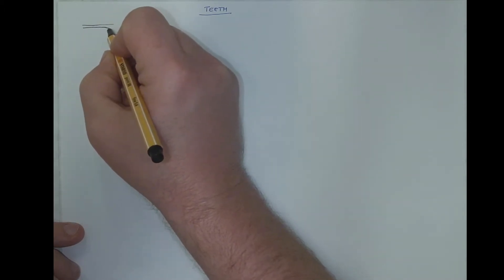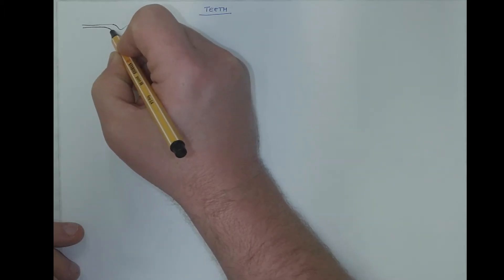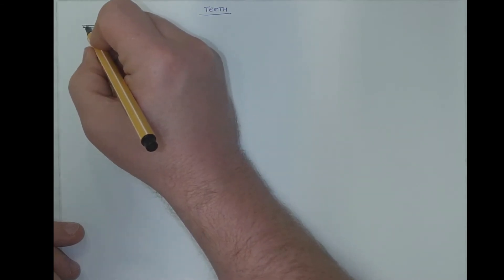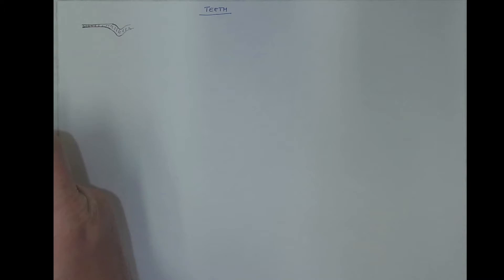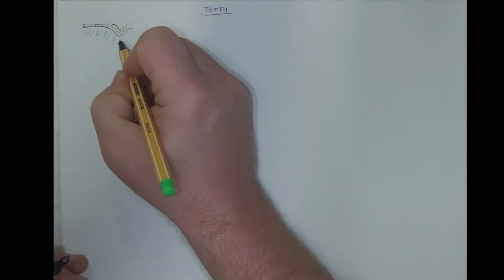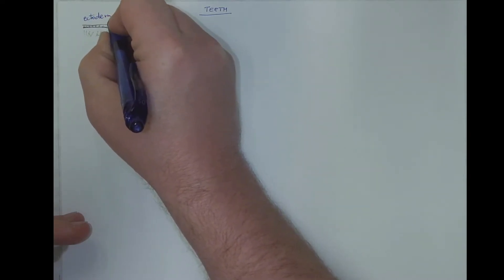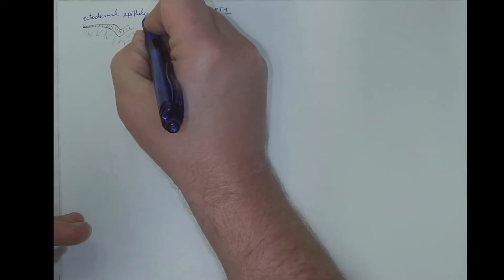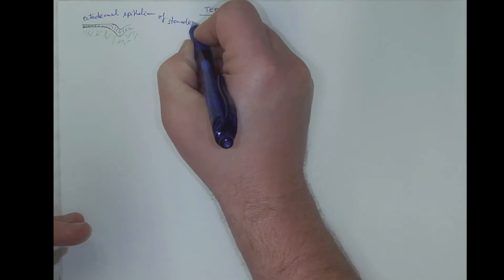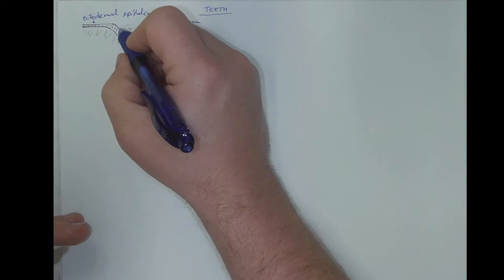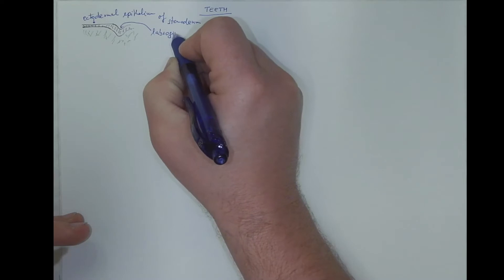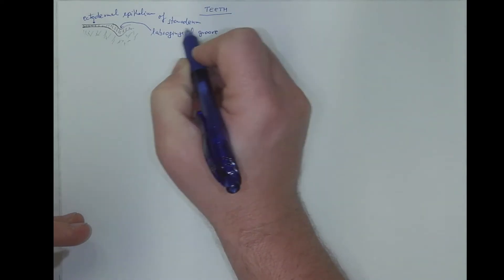Let's start with the epithelium of the oral cavity that forms the labio-gingival groove, which will separate the lip from the gingiva. We have the mesenchyma beneath the epithelium, the ectodermal epithelium of the stomodeum, and this labio-gingival groove separates the gingiva from the lip, including the underlying mesenchyma.